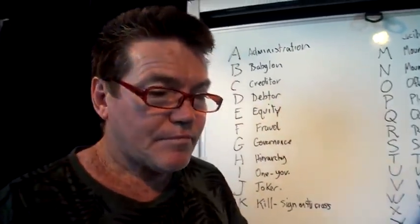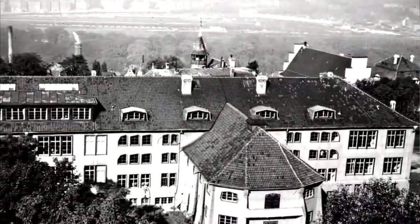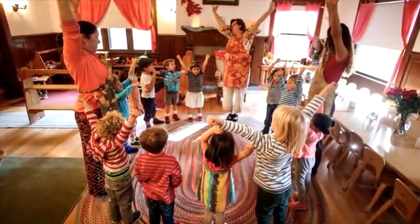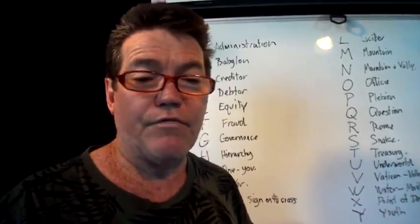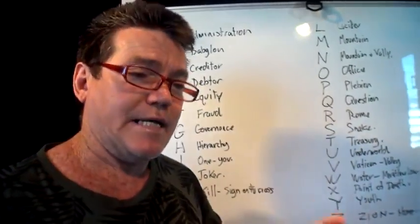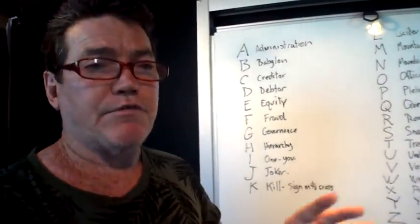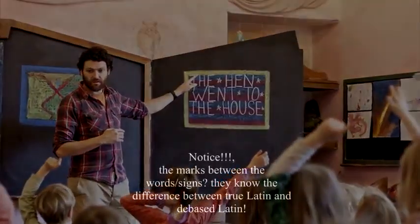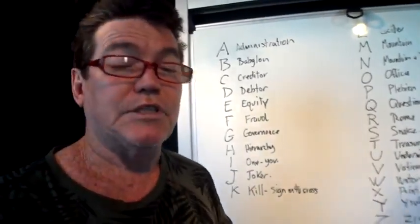In the Steiner schools, it's a different type of teaching. They've conformed more to the government schooling system these days in Australia, simply to get government funding, so their curriculum has had to follow more closely to the standard of the state. But what I did notice is the way they teach children — the first few years of schooling deal very little in English and writing. It all deals in symbolism, art, and developing the skills of art and music, and then when they're ready they bring them more into the academic side.